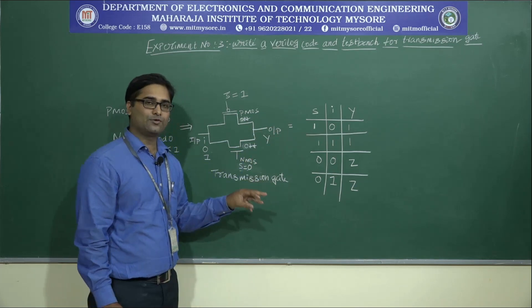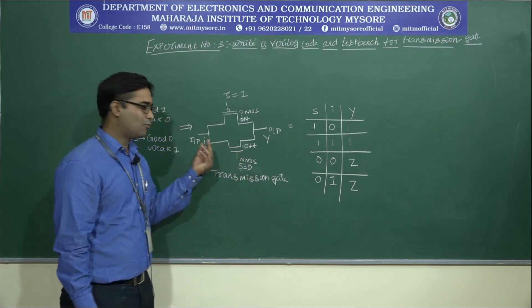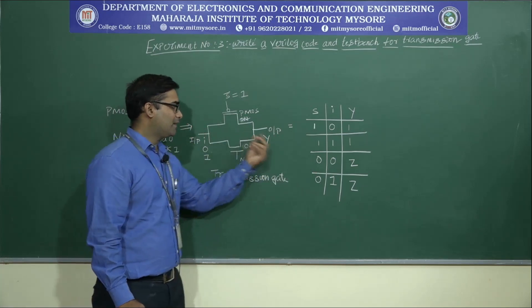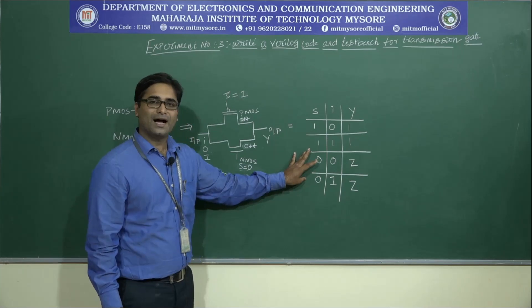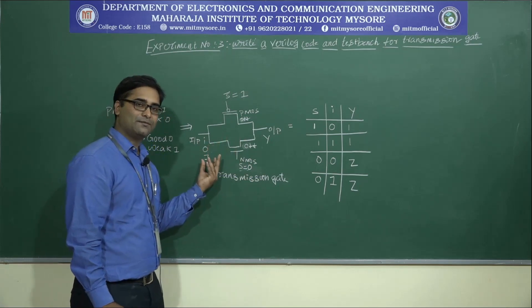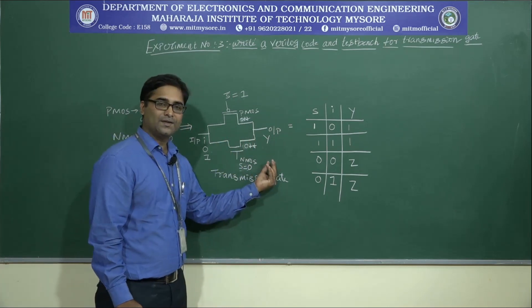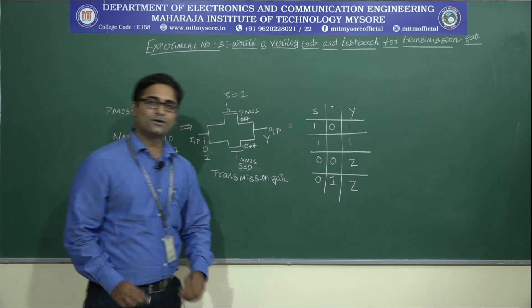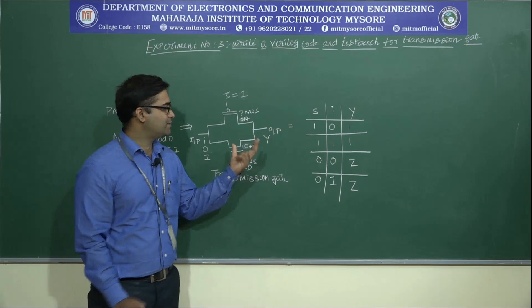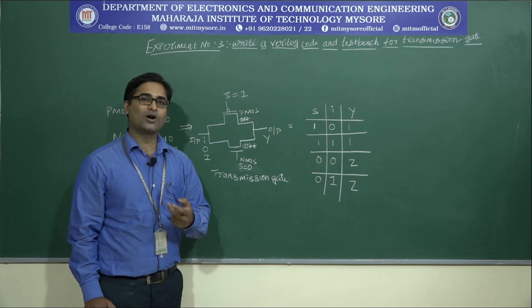So summarizing with the truth table: when the select signal is 0, whatever input we provide — either 0 or 1 — the output is in the high impedance state. When the select signal is 1, if input is 0 the output is 0, and if input is 1 the output is 1. We will now write the Verilog code and test bench for this transmission gate using behavioral modeling style.